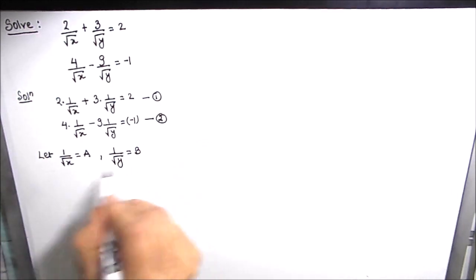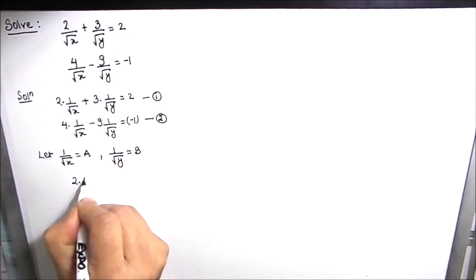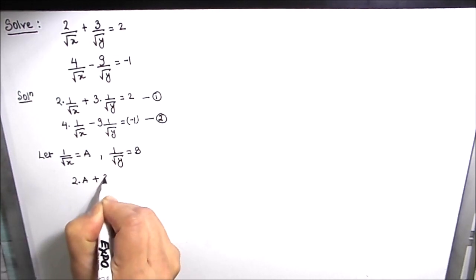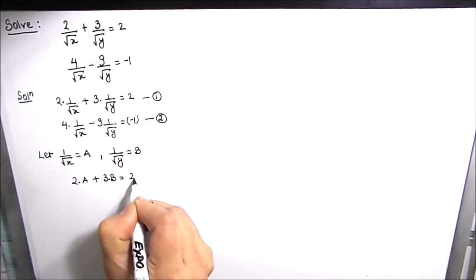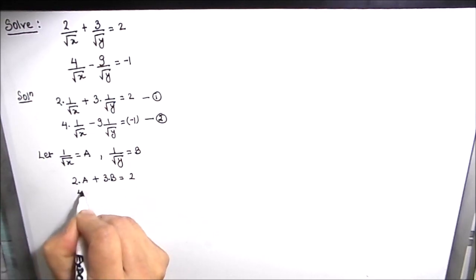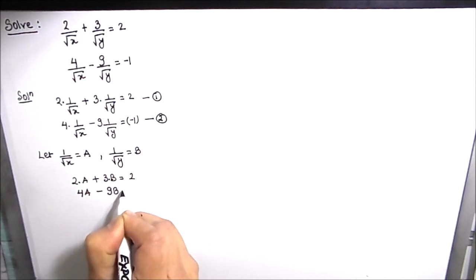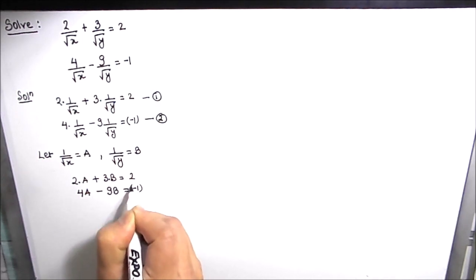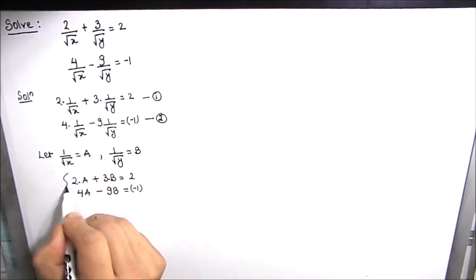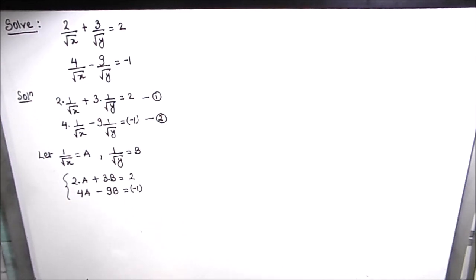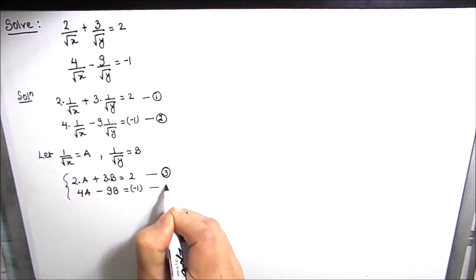So let's put the values of A and B into equations 1 and 2. This will become 2A plus 3B is equal to 2, and the second one will be 4A minus 9B is equal to negative 1. These are two linear equations. We can solve these by the elimination method. Let these be equation 3 and equation 4.